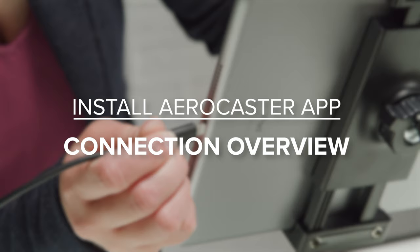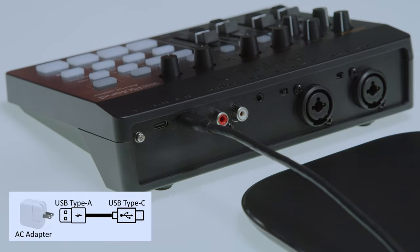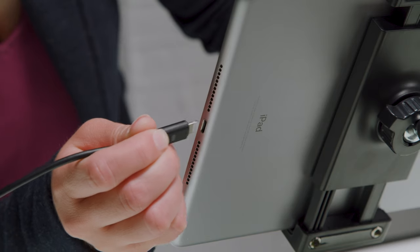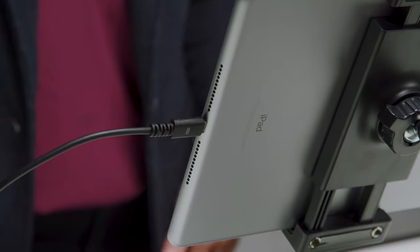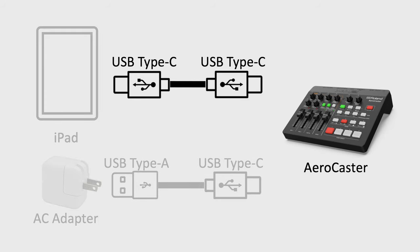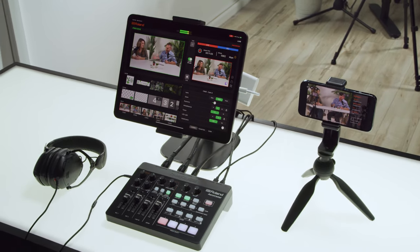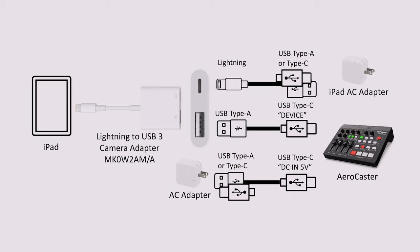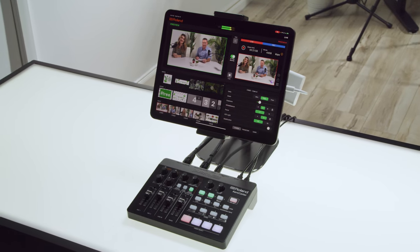If you want to screen share from a computer, you'll need to install the Google Chrome web browser. Now let's discuss some connectivity options with the AeroCaster streaming system. Use a USB-C cable to connect the VRC-01 to a 5-volt power adapter. If you have an iPad with a lightning connector, connect the included lightning to USB cable to the VRC-01 device port, then connect the VRC-01 to your iPad. If you have an iPad with a USB-C connector, connect a cable with USB-C on both ends to the VRC-01 device port. We recommend fully charging your mobile devices before starting a live stream, but you can also use an adapter to charge your iPad during live streaming. For iPads with a lightning port, we recommend using a lightning to USB 3 camera adapter, and for iPads with a USB Type-C port, use the USB-C digital AV multi-port adapter.